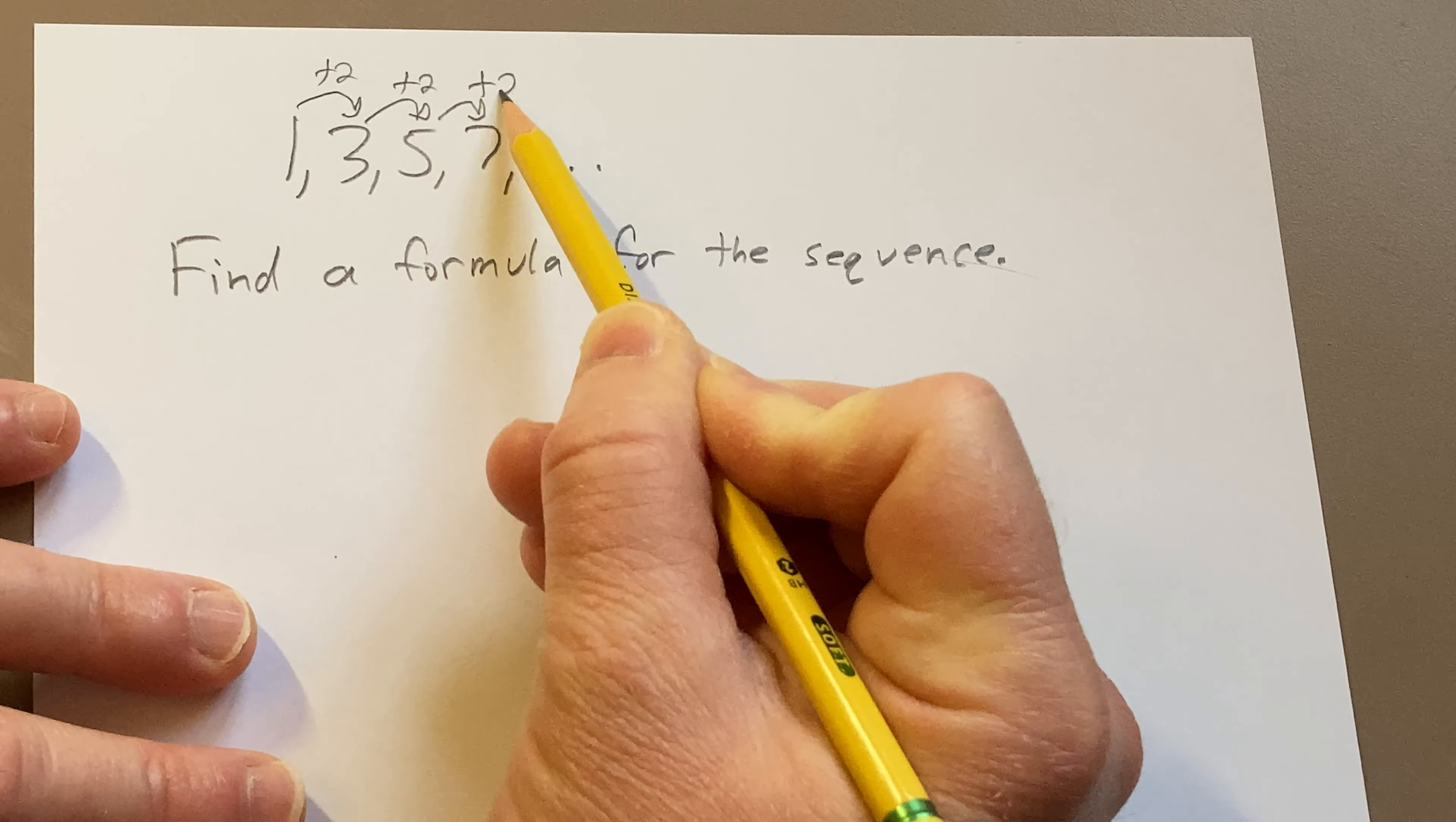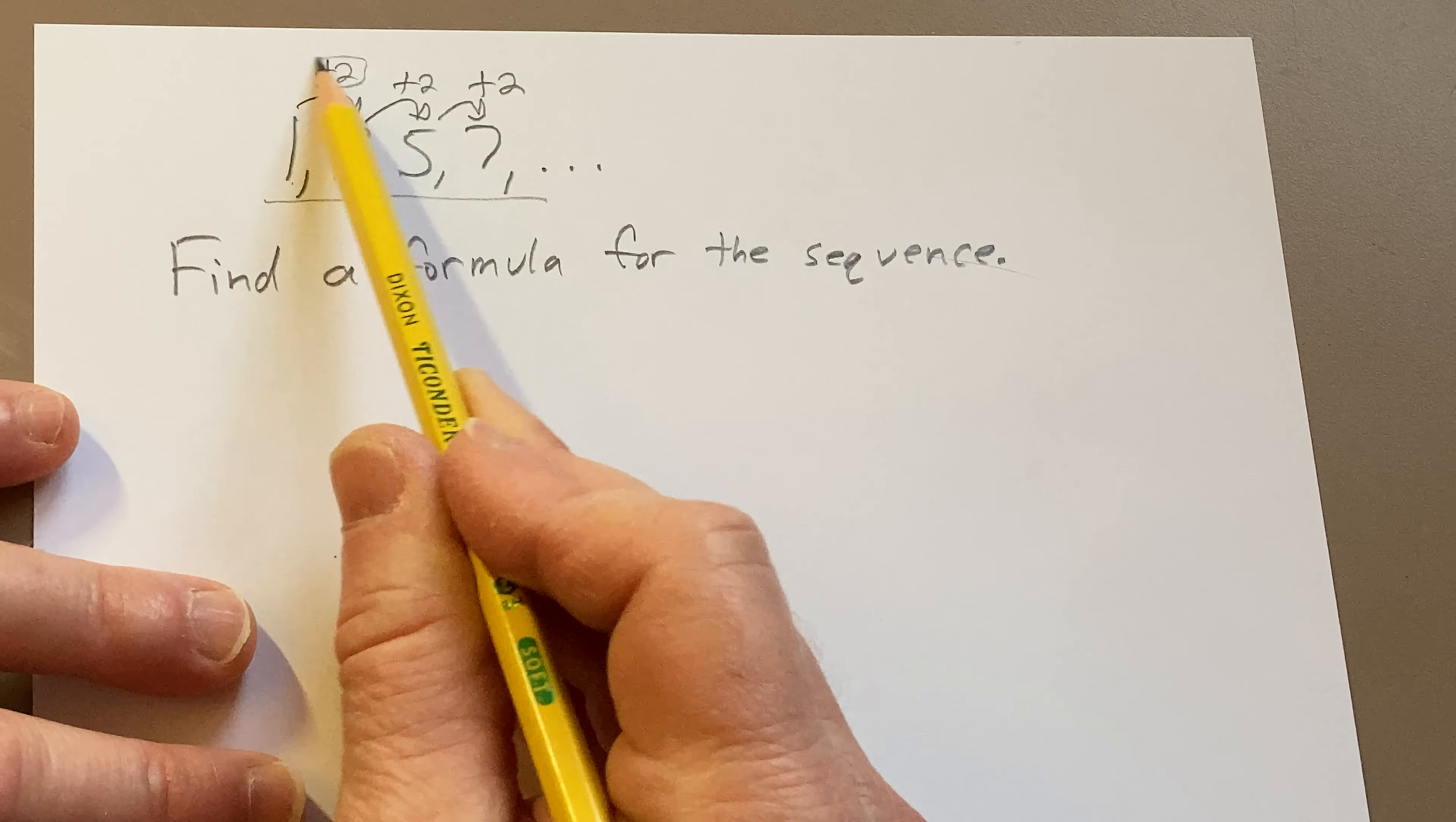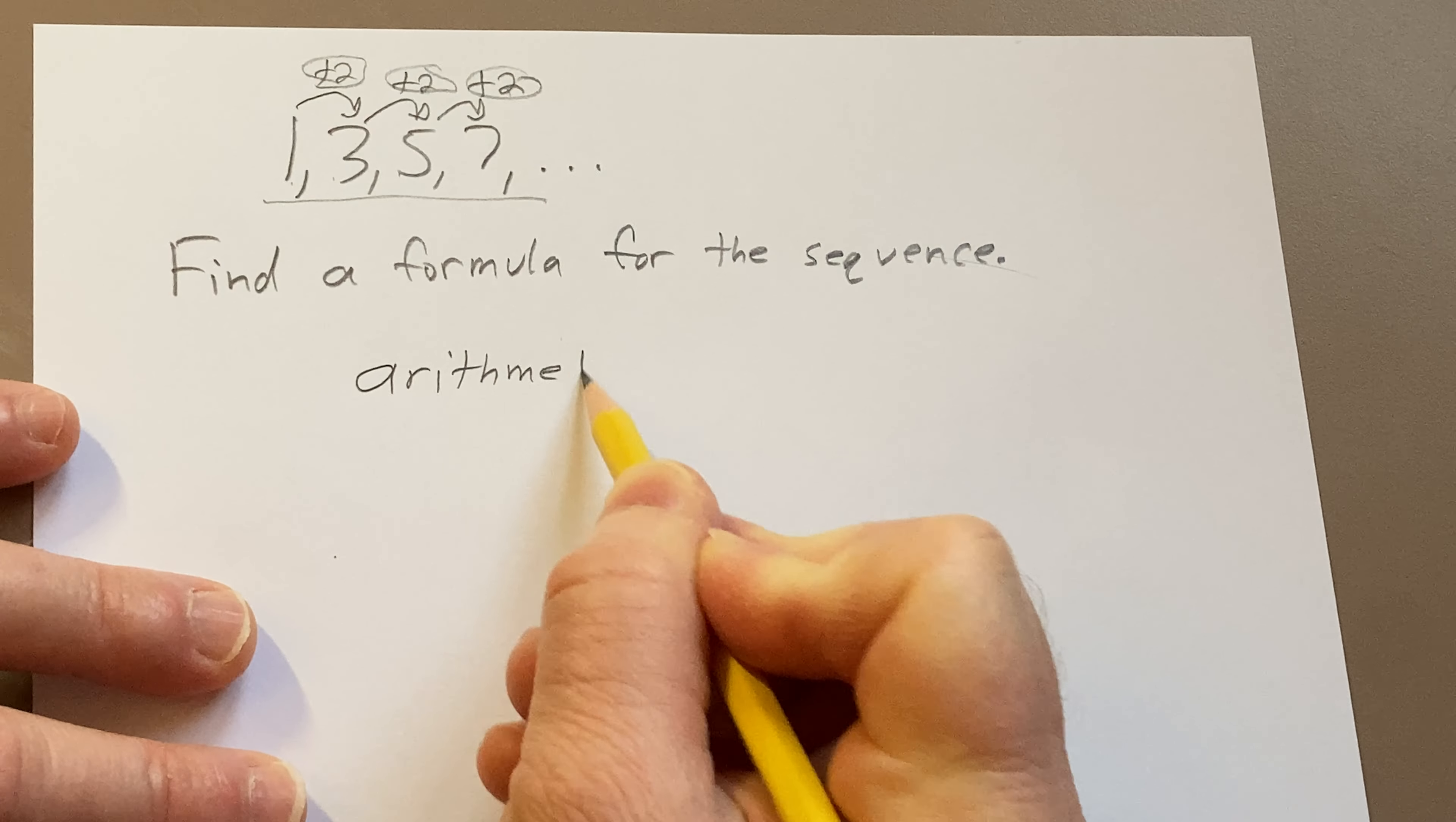And so whenever you have a sequence that each term except the first is obtained by adding a number and the same number over and over, this is called an arithmetic sequence.